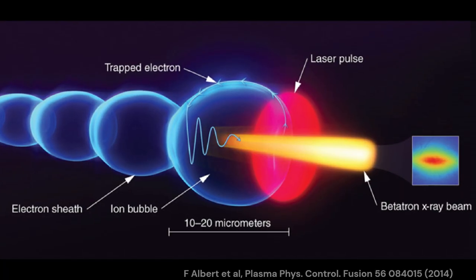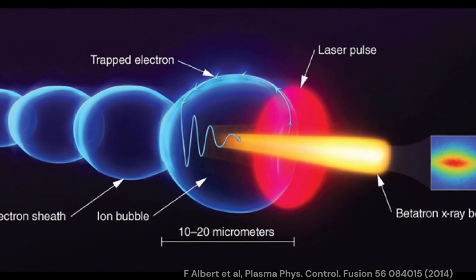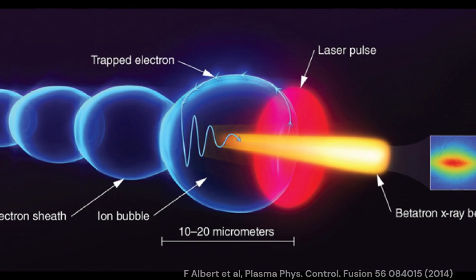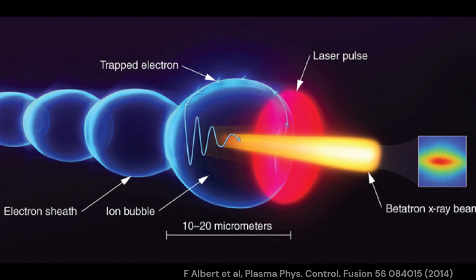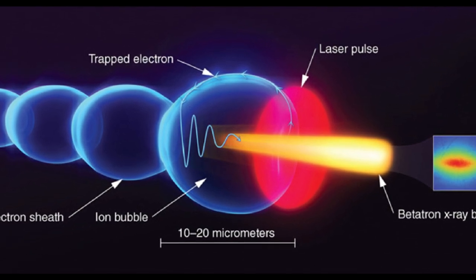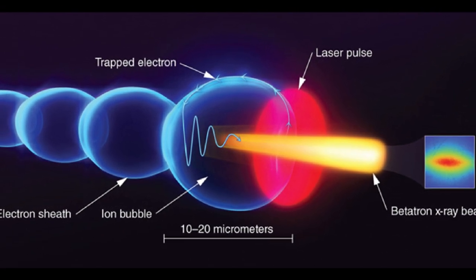Then the ponderomotive force drives the plasma electrons to the highest-intensity regions of the laser pulse. Then they get pulled back by the space-charge force of the ions, resulting in an accelerating plasma wake. In very simplified terms, it's like the electron is trapped and carried by the laser.